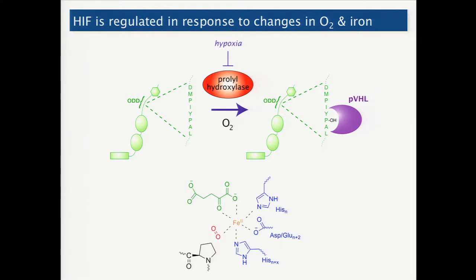Any good scientific project should inspire a whole new set of questions, not just answer the ones you thought you were interested in when you started out. Our work on this pathway led us to think more about iron homeostasis. Iron is a cofactor for these prolyl hydroxylase enzymes, and the chemical properties of iron make it very useful for these and many other enzymes to carry out their biological functions.